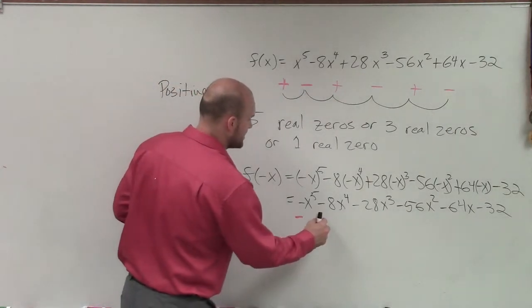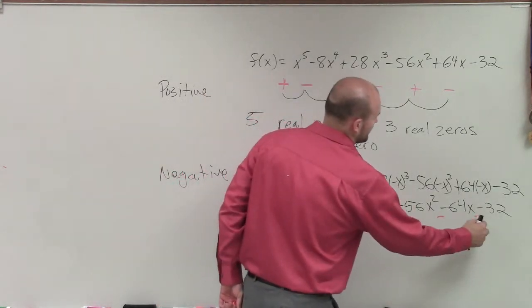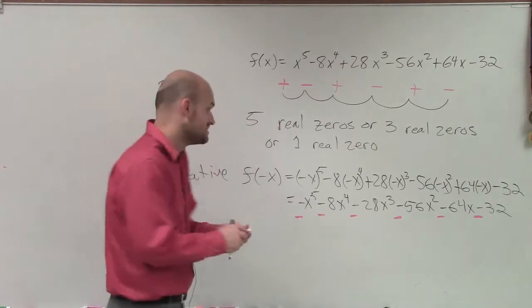Because I bring down the signs, I have a negative, negative, negative, negative, negative, negative. Therefore, there's no alternating signs.